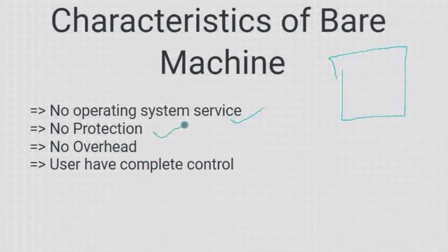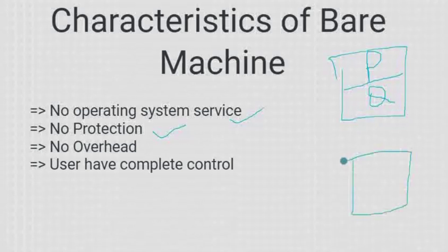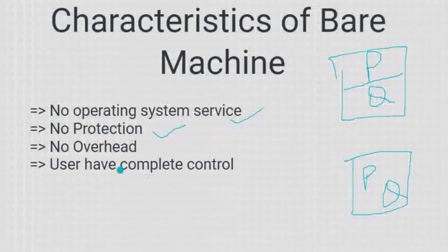Bare machine की characteristics: पहला — कोई operating system की services नहीं है। Memory जो use हो रही है वो complete chunk है, कोई partition नहीं है। इस वजह से कोई protection भी नहीं है। Protection का मतलब — अगर यहाँ पर process P का code रखा है और process Q का code भी इसी memory में है, तो P can also access data of Q and Q can also access data of P. So there is no protection.